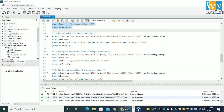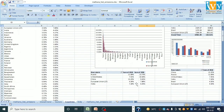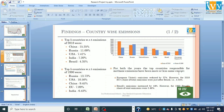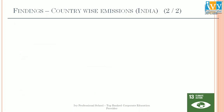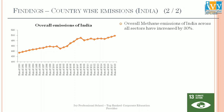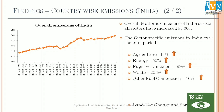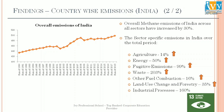Moving on to India-specific findings — overall methane emissions of India increased from 1990 to 2018, with a total increase of 30%. Sector-specific increases for India: agriculture +14%, energy +50%, fugitive emissions +99% (almost 100%), waste two-fold increase, other fuel combustion +16%, land use change and forestry +35%, and industrial processes +160%.